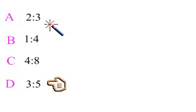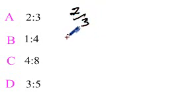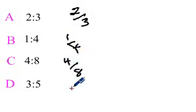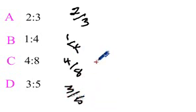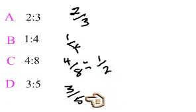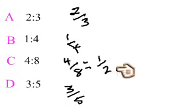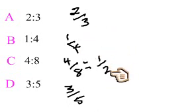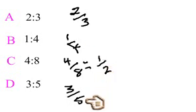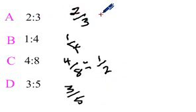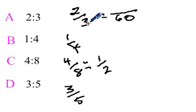The first method is to change these ratios to fractions and find a common denominator to compare them. So recipe A is two-thirds, recipe B is one-quarter, recipe C is four-eighths — which simplifies to one-half — and recipe D is three-fifths. Now looking at the denominators, I have three, four, two, and five. Between four and three, 12 is a common denominator, and two is also a factor of 12. But five isn't, so the common multiple of 12 and five is 60.